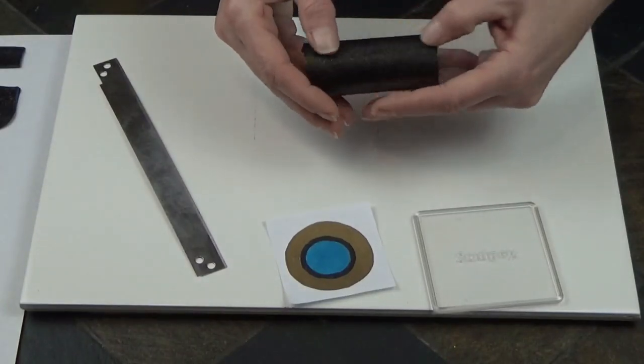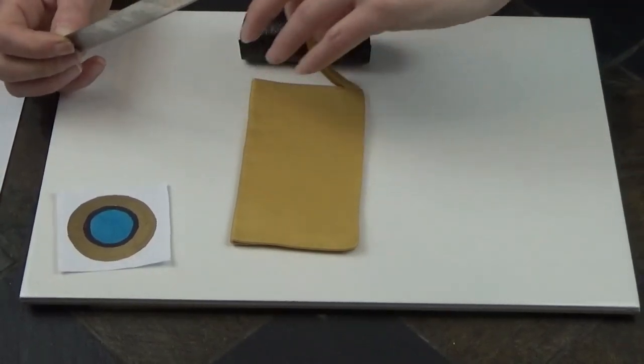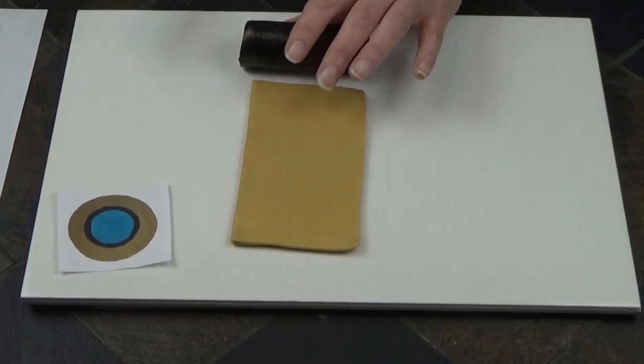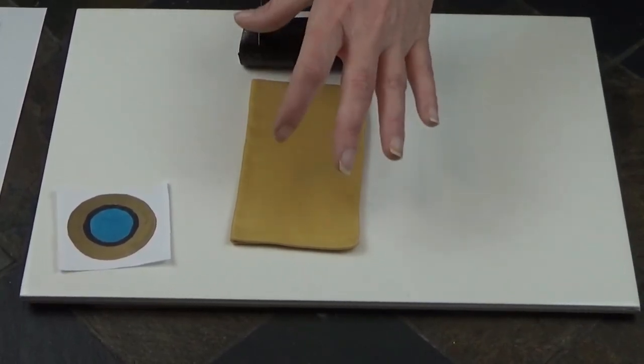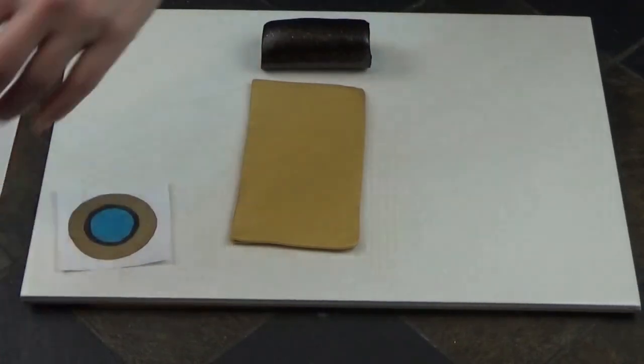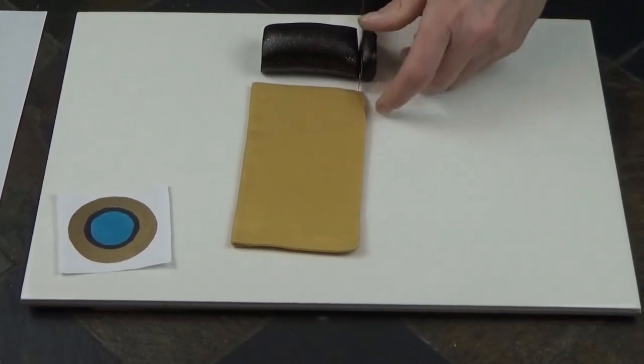Just make sure you smooth the seams out so that they match and then roll again with your second sheet of clay. I'm going to trim the log so that it's matching the second sheet of clay and then trim that out again.